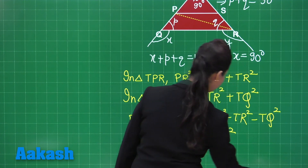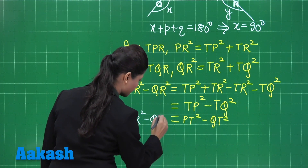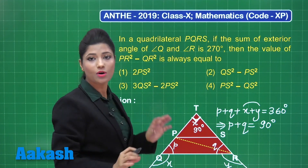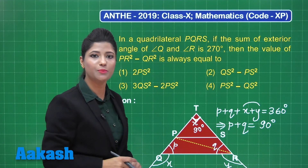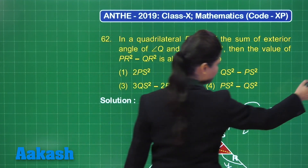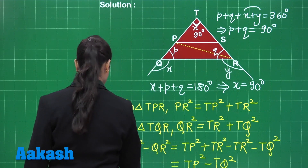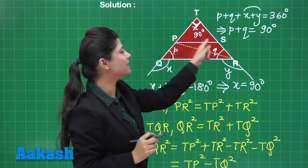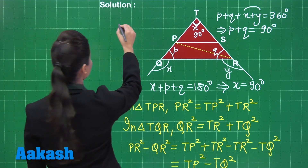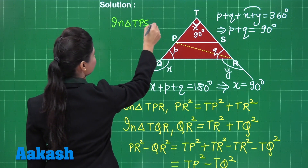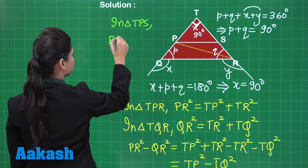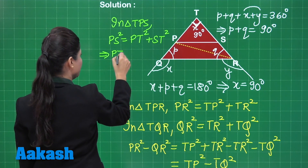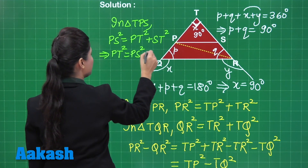The options provided include QS and PS, so we need to express our answer in terms of PS and QS rather than PT and QT. Since triangle TPS is also a right angle triangle, in triangle TPS we get PS squared equals PT squared plus ST squared, which gives PT squared equals PS squared minus ST squared.